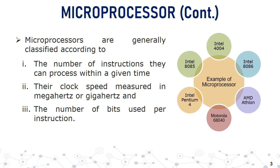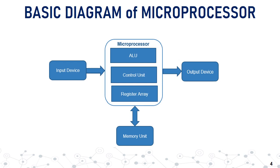All these microprocessors are generally classified according to three important factors: the number of instructions they can process within a given time, their clock speed which is usually measured in megahertz or gigahertz, and the number of bits used by the processor.